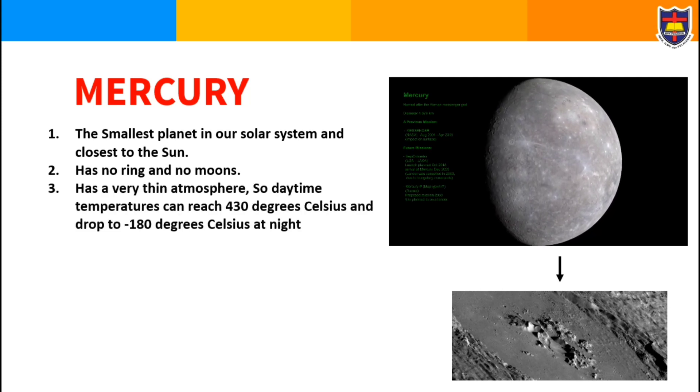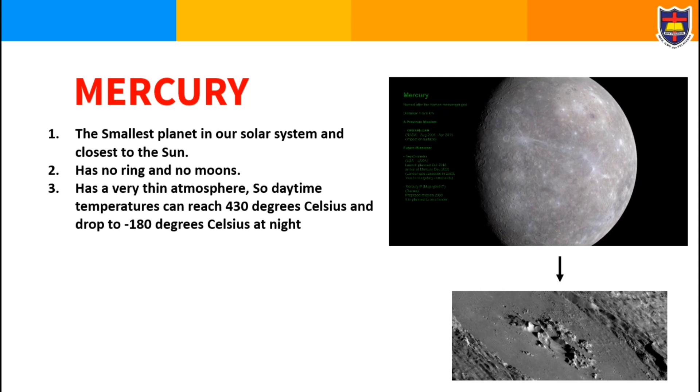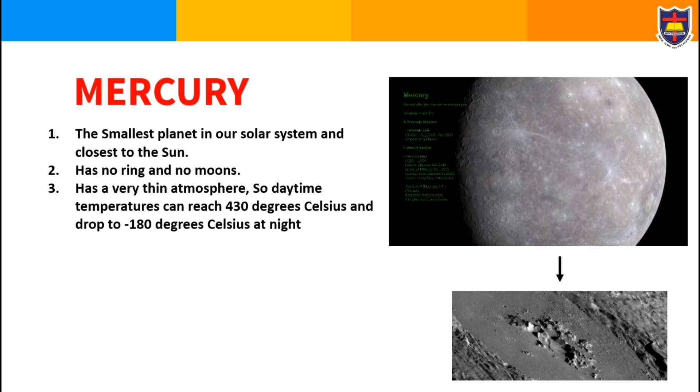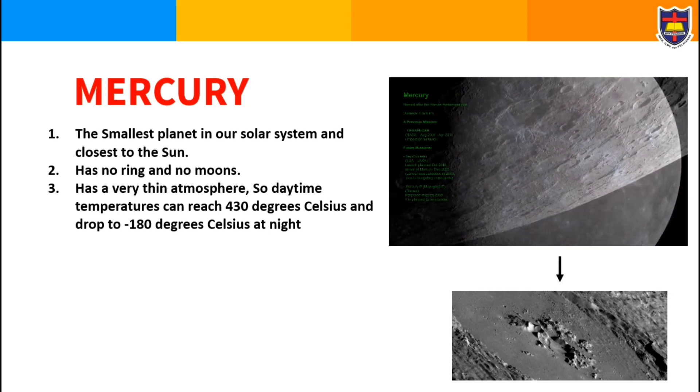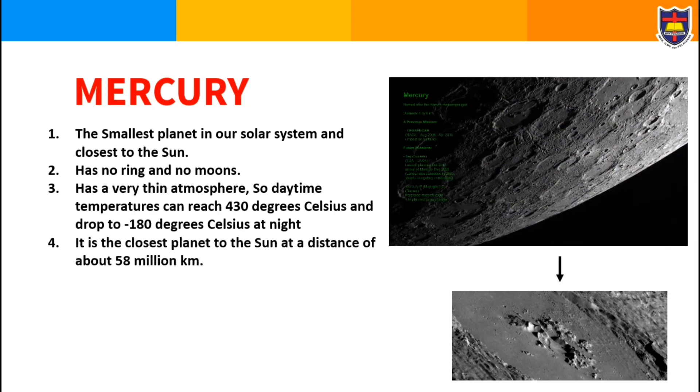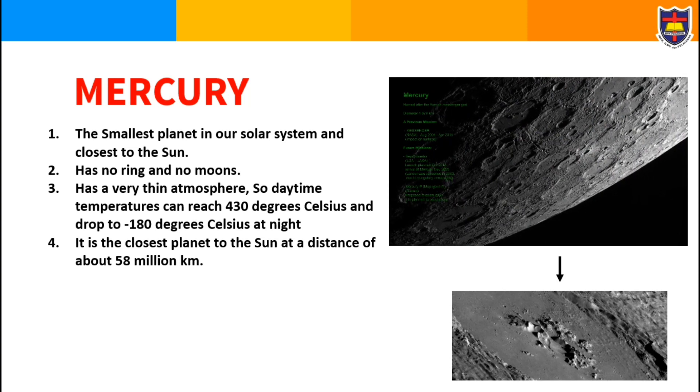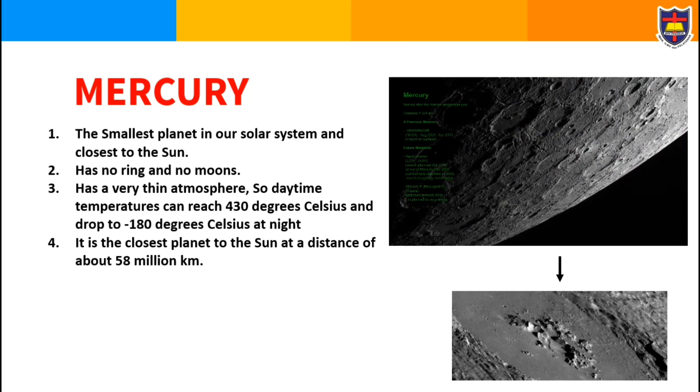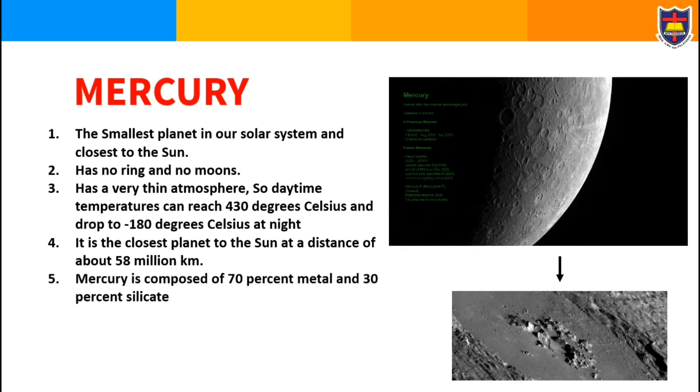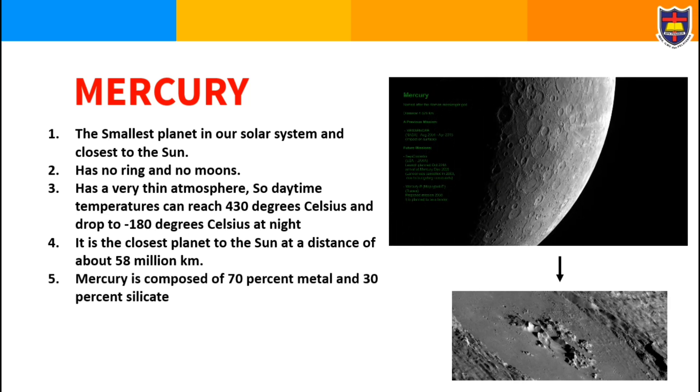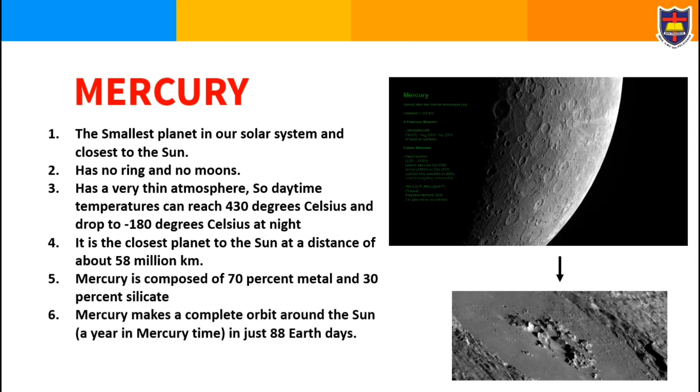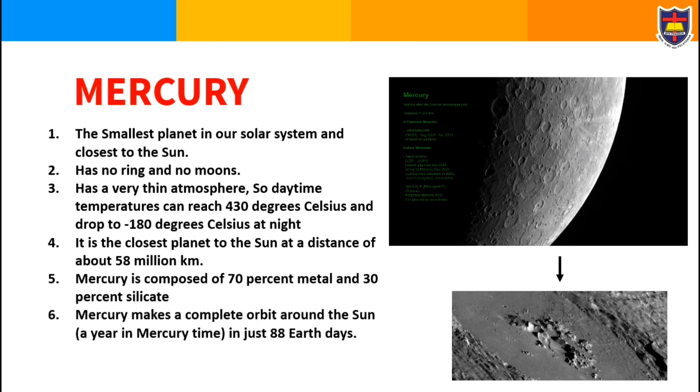Mercury has a very thin atmosphere, so daytime temperatures can reach 430 degrees Celsius and drop to minus 180 degrees Celsius at night. It is the closest planet to the Sun at a distance of about 58 million kilometers. Mercury is composed of 70% metal and 30% silicate. Mercury makes a complete orbit around the Sun in just 88 Earth days.